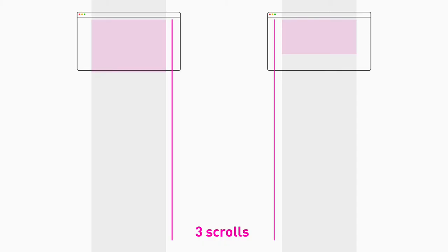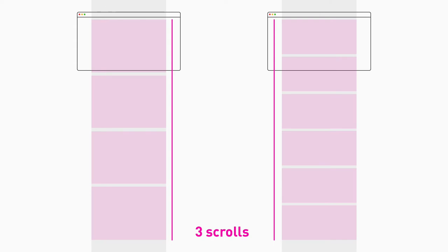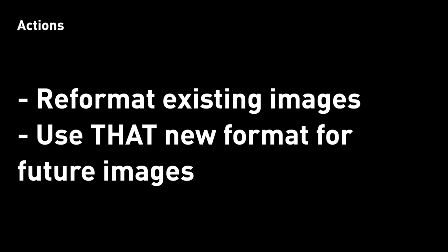Here's an example: if a hiring manager only does three scrolls when looking at your website, using wider aspect ratio images might give them six images versus only four with a taller or narrower aspect ratio. The option that shows six images provides more information. So some actions to take: reformat your existing images, reframe them, restructure them into a wider aspect ratio, and use that as the new standard template for any new images you create for new or current projects.